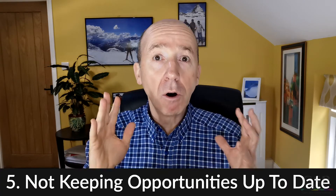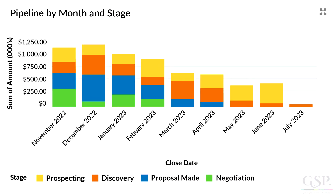And finally, mistake number five — and probably the most common — not keeping your opportunities up to date. Here's an example: let's assume we are in the last week of November and the sales cycle in this business is three months. Are those deals in the prospecting and discovery stage that are due to close this month really at the right opportunity stage? If they are, then you are right to be sceptical about whether they will close successfully this month. That means the pipeline view is probably not all that robust. Either the deals should be at a more advanced stage, or at a different close date, or maybe both.